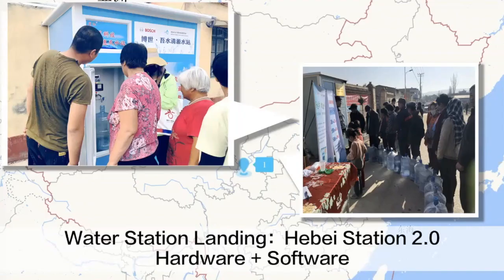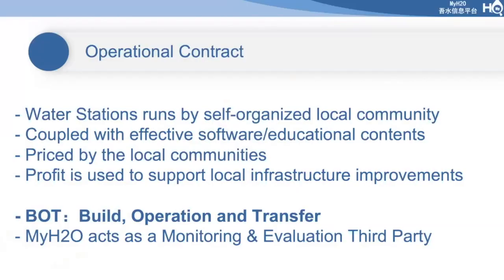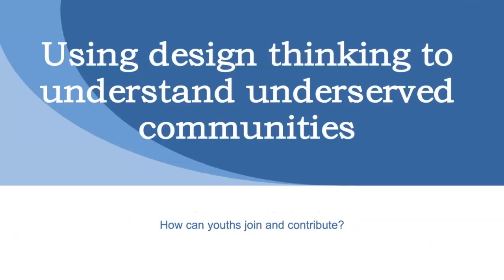So we moved to Water Station 2.0. We created an operational contract allowing the station to be run by self-organized local communities, coupled with educational content. Pricing is decided by local communities, and profits from water stations support local infrastructure improvements. We also introduced a COMBOT model — we build it, the local community operates it, and after two to three years of successful operation with monitoring and evaluation, we transfer ownership to the community. The contract is signed ahead of time so community organizations know their rights and responsibilities clearly, giving us a strong match of hardware and software for sustainability.